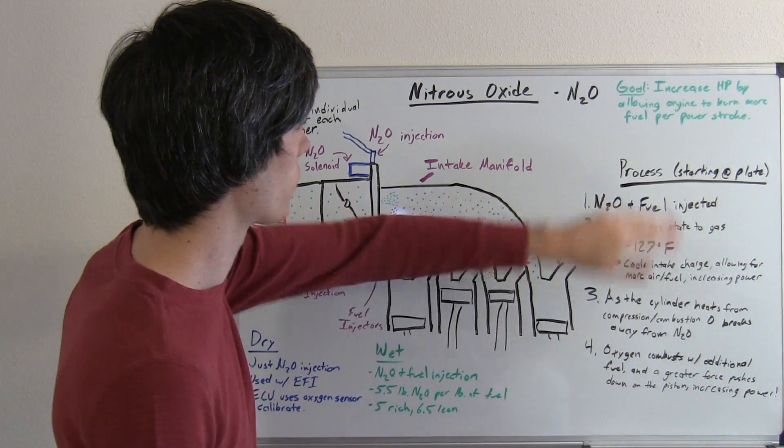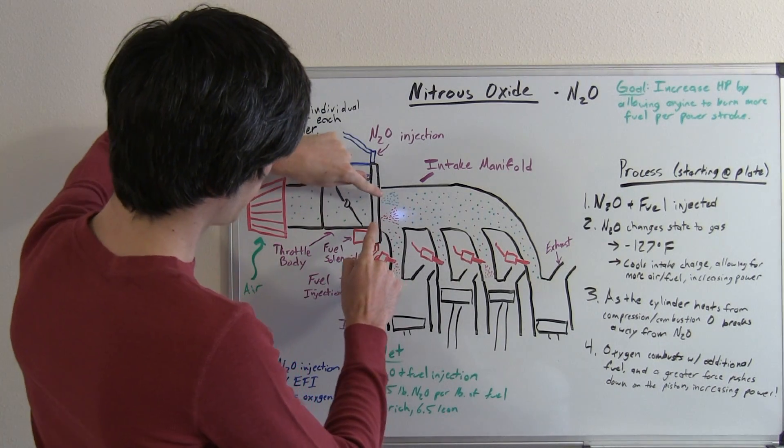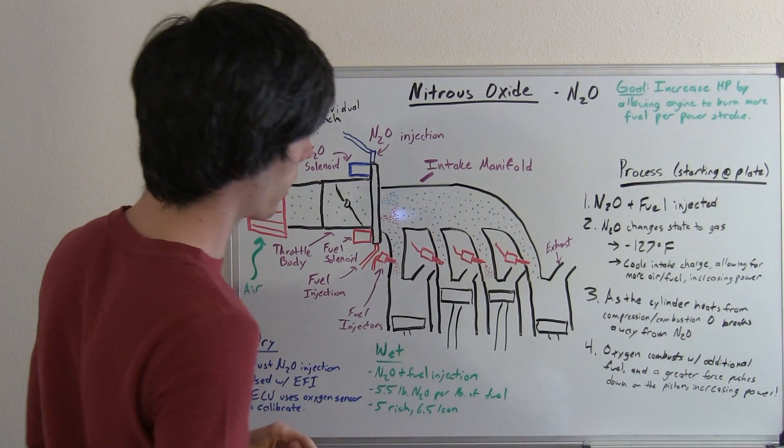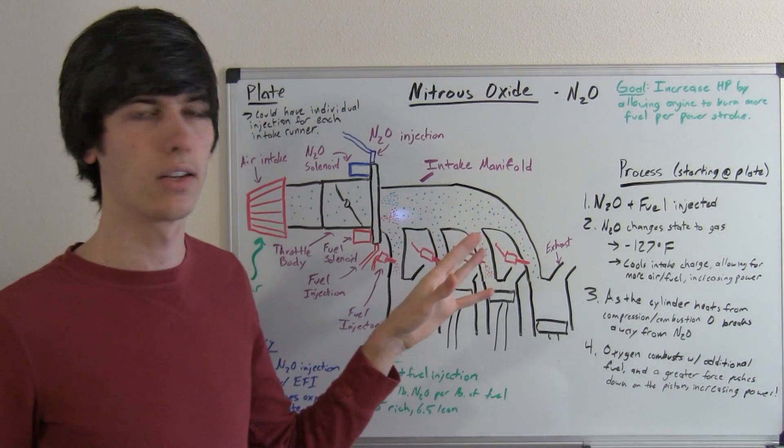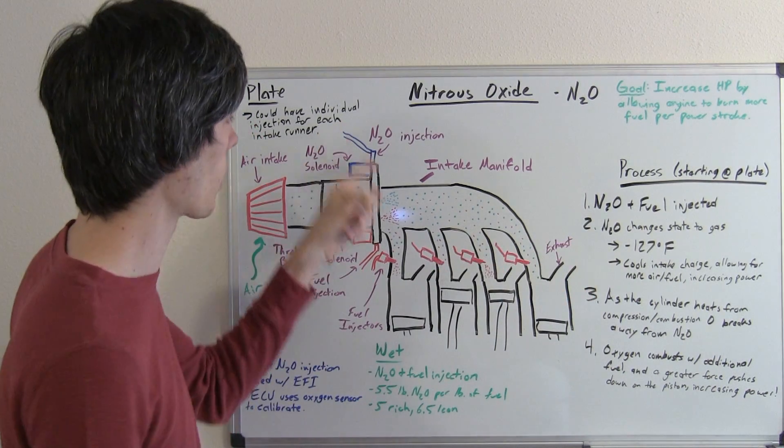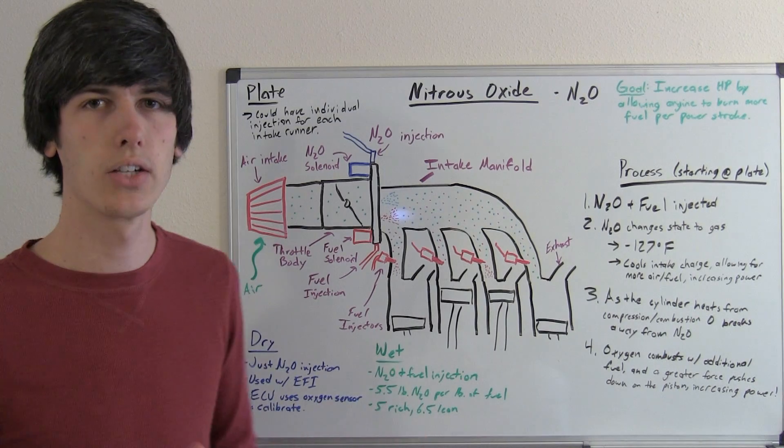So what's the process starting at this plate? Well, you're going to be injecting the nitrous and the fuel into the intake manifold. Now what happens when that nitrous and fuel is injected into the intake manifold is the nitrous, which is coming in as a liquid, once it's sprayed in it changes to a gas. And when it changes state, it drops its temperature to minus 127 degrees Fahrenheit.